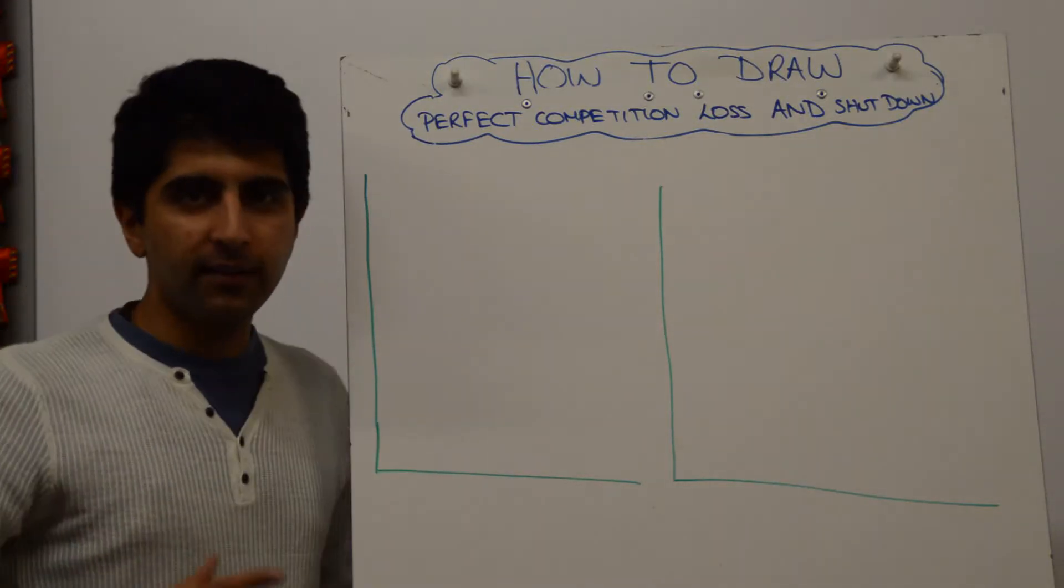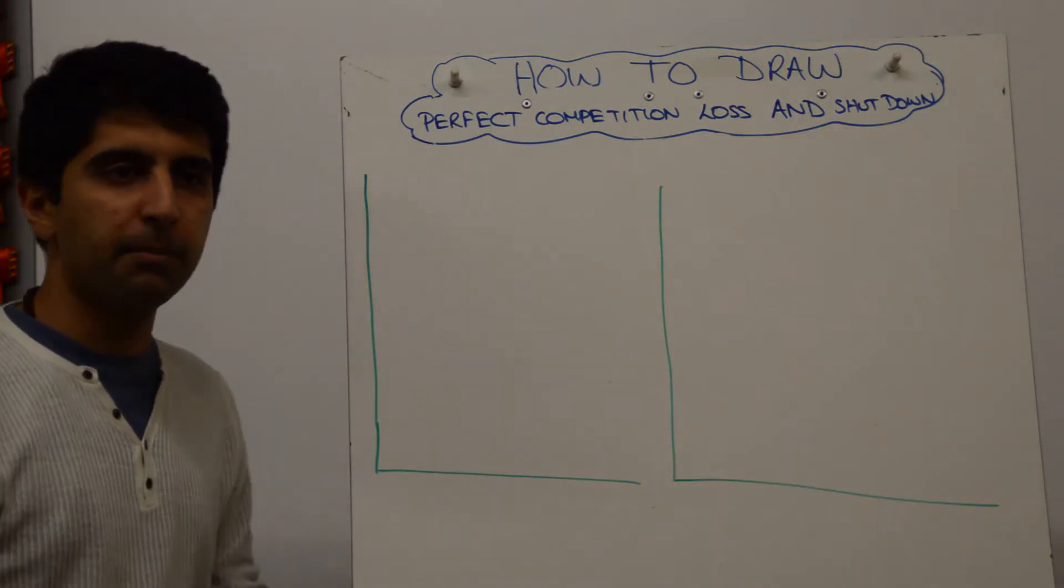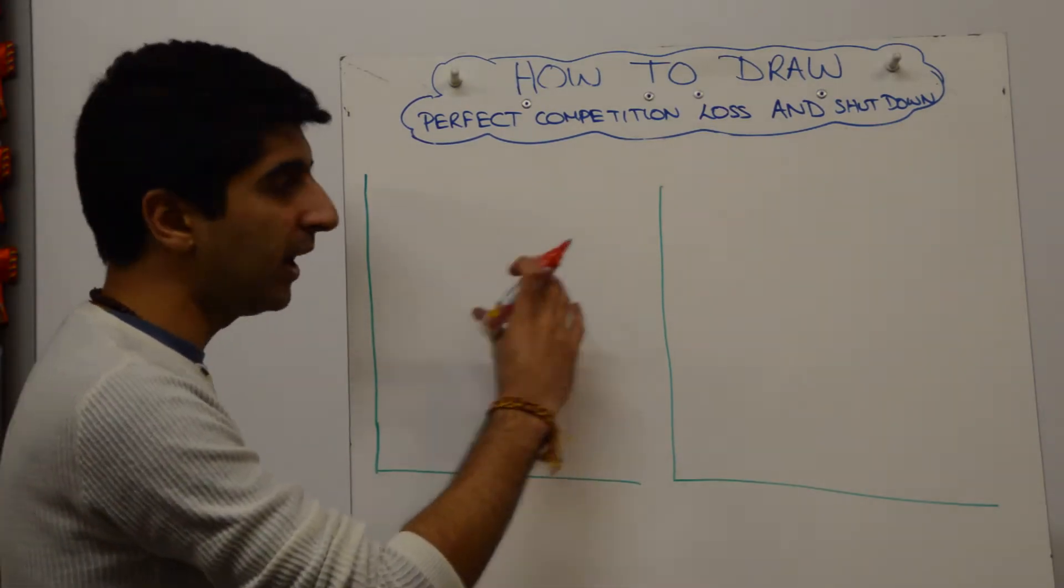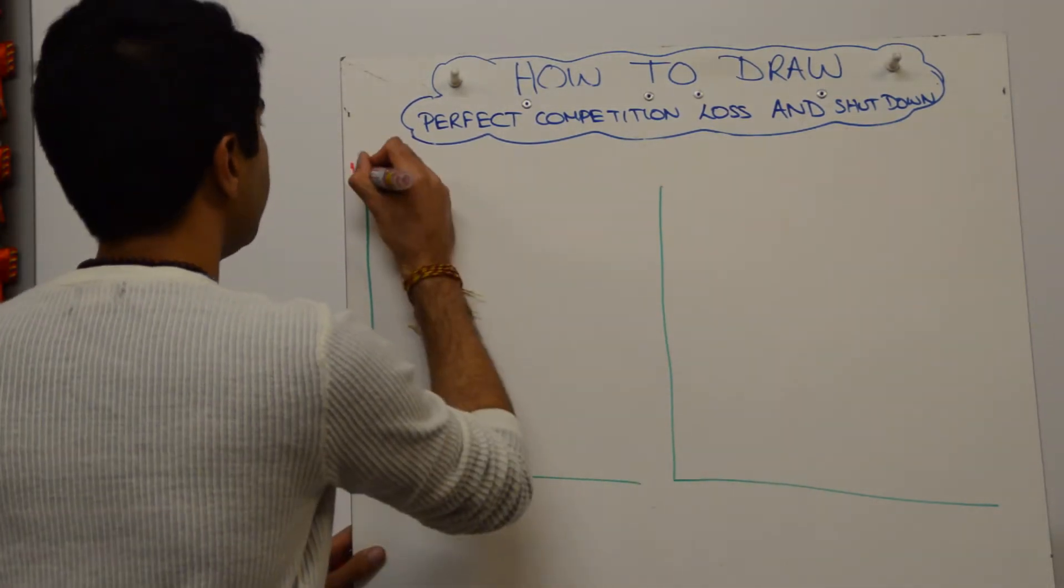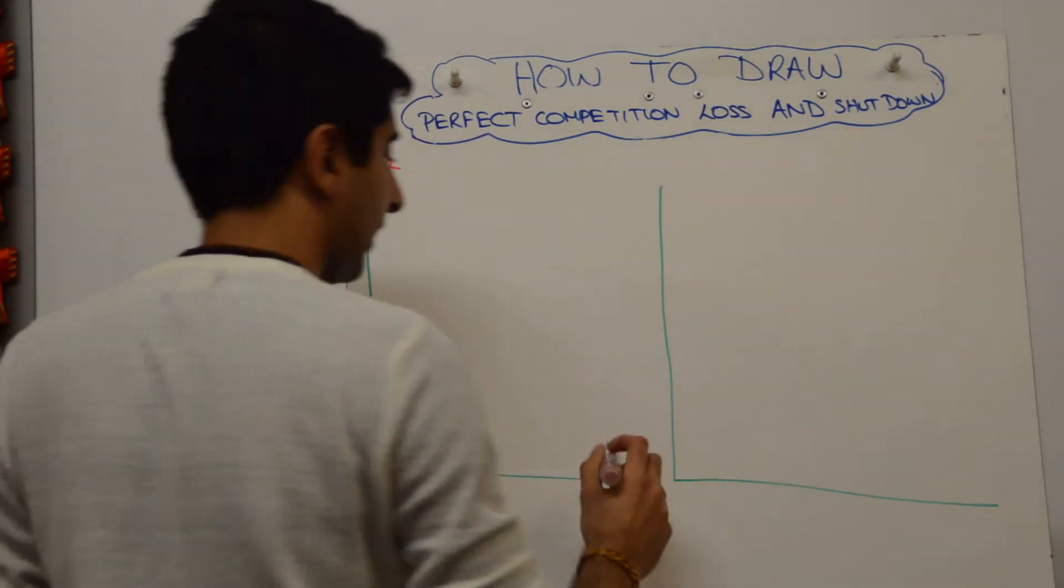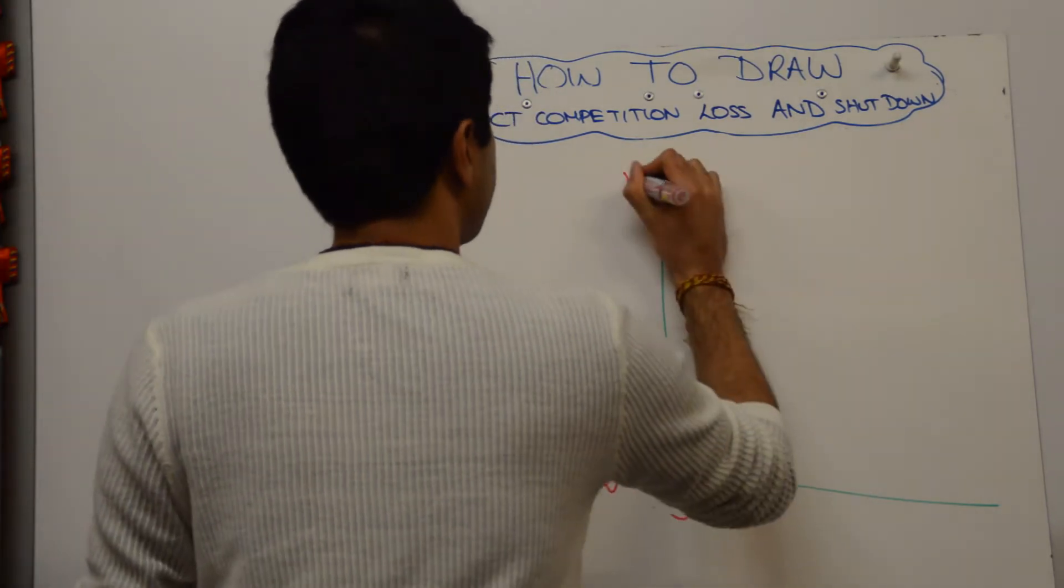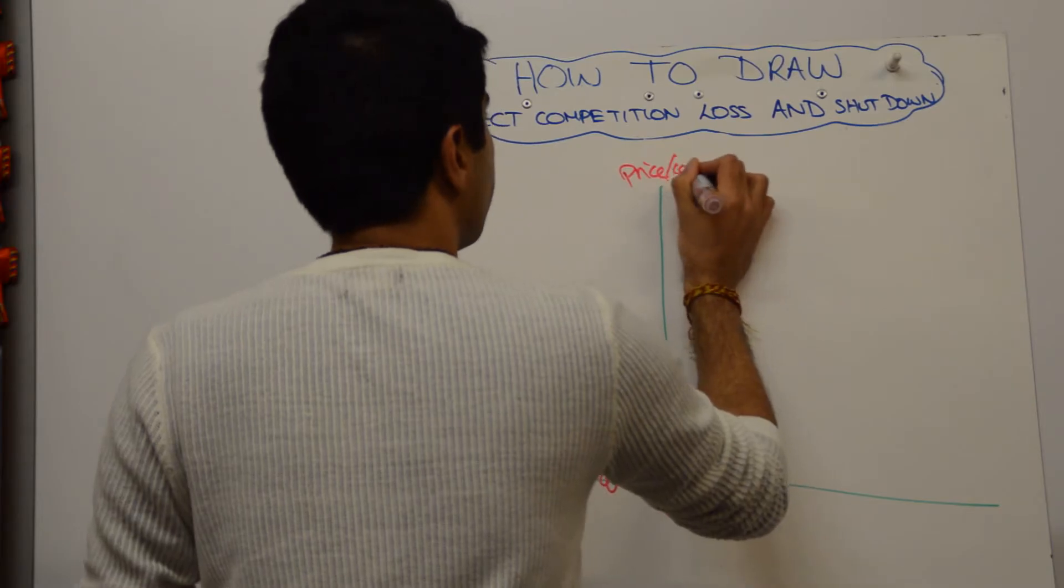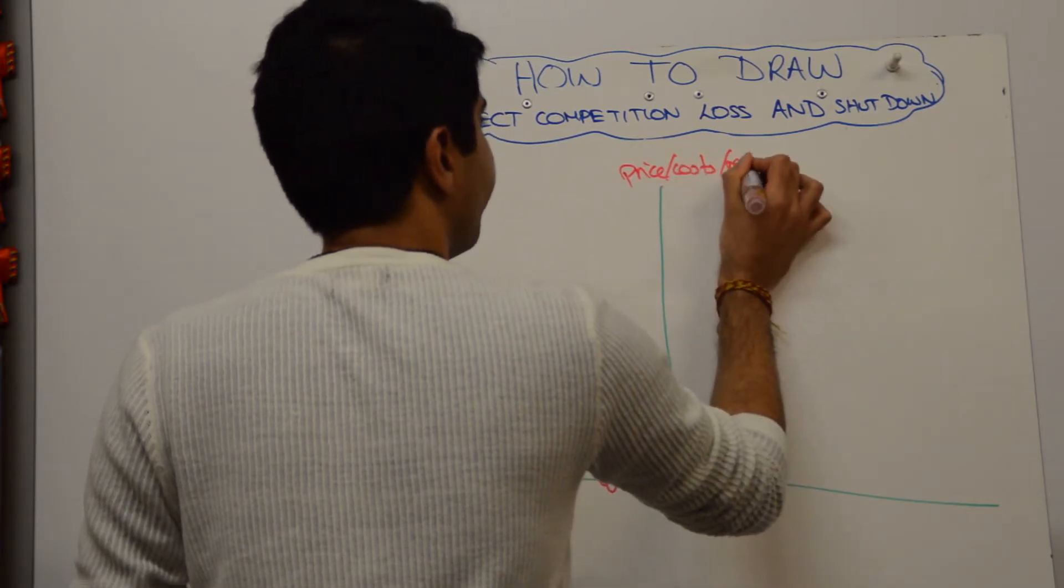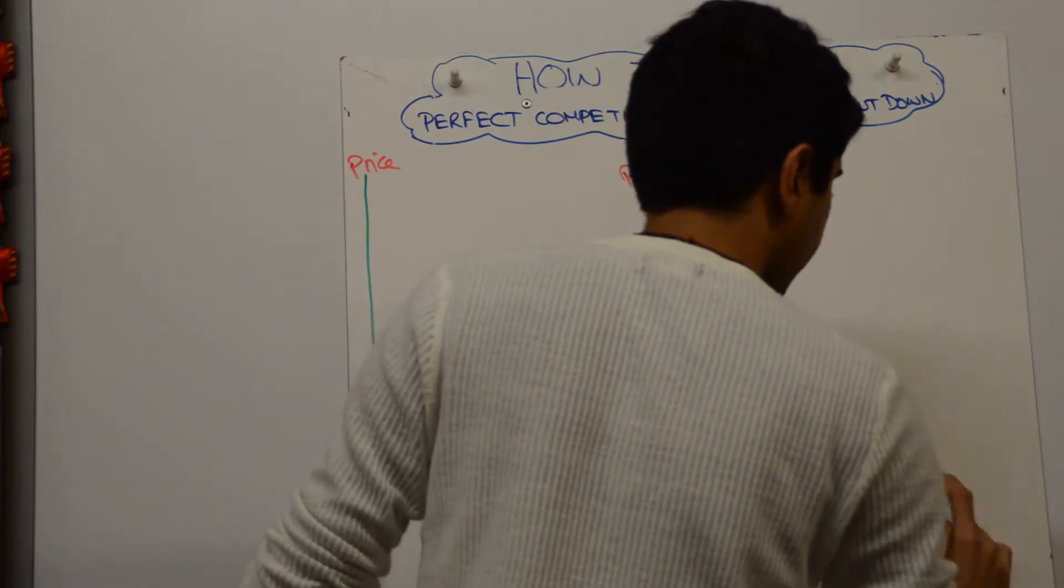Hi everybody, in this video let's illustrate the shutdown condition in Perfect Competition. Market on the left, individual firm on the right. We're going to have price and quantity on the left, and price, costs, and revenue on the y-axis for the firm, and quantity on the x-axis.